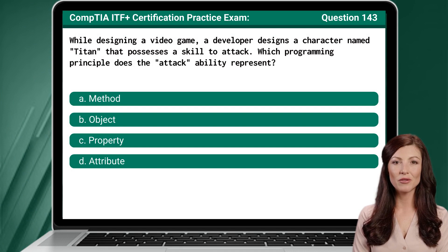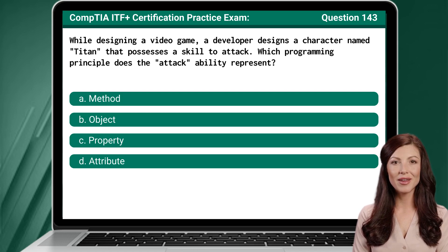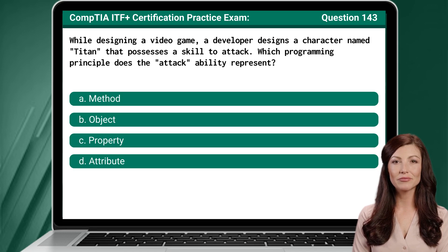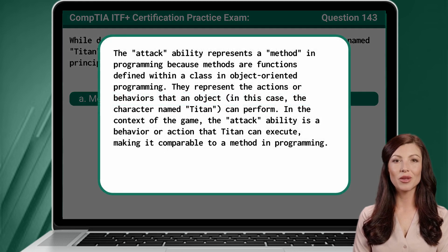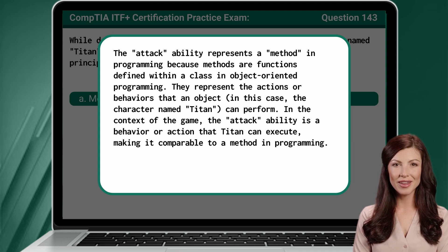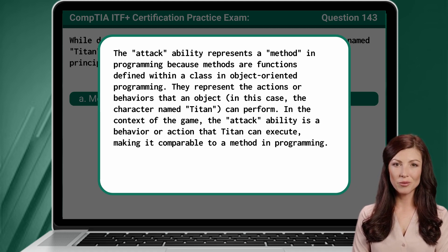Question 143. While designing a video game, a developer designs a character named Titan that possesses a skill to attack. Which programming principle does the attack ability represent? The answer is A — Method. The attack ability represents a method in programming because methods are functions defined within a class in object-oriented programming. They represent the actions or behaviors that an object — in this case, the character named Titan — can perform. In the context of the game, the attack ability is a behavior or action that Titan can execute, making it comparable to a method in programming.